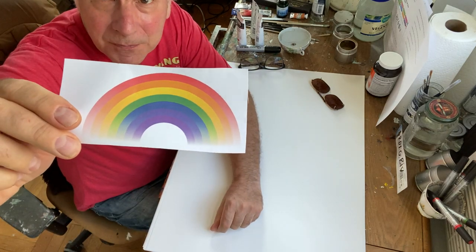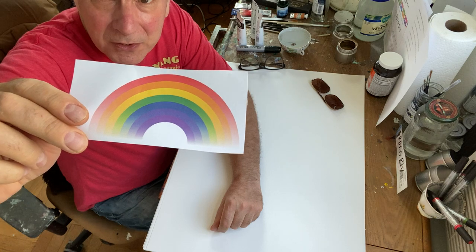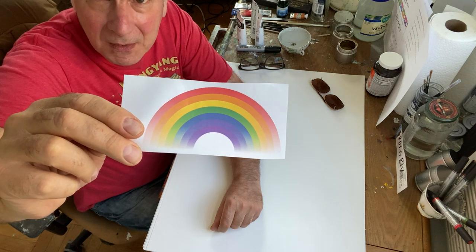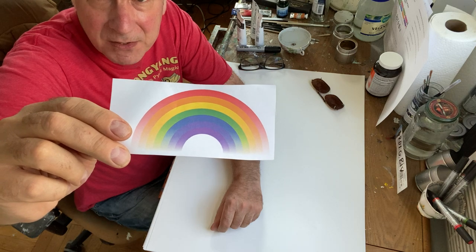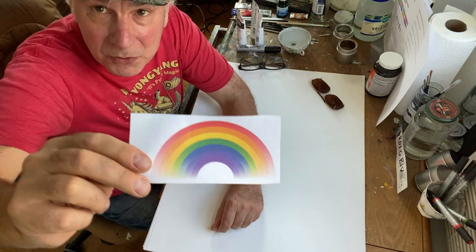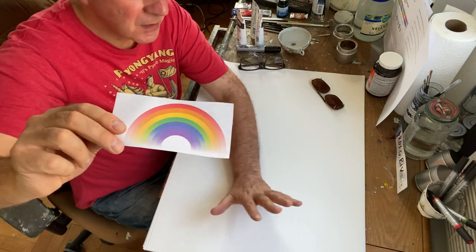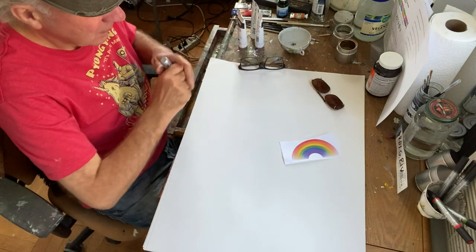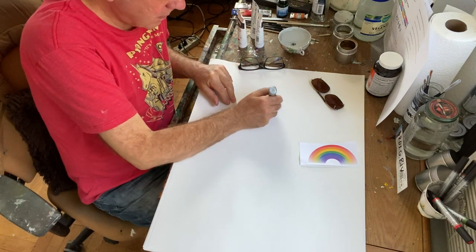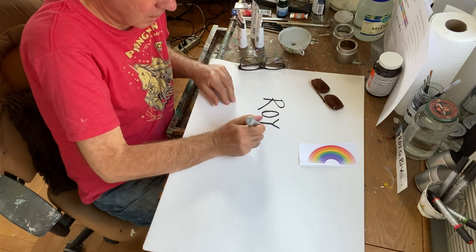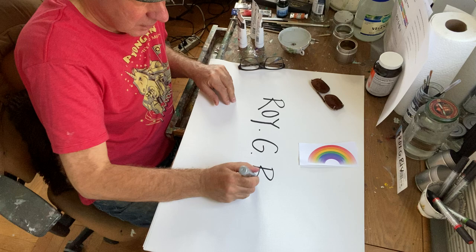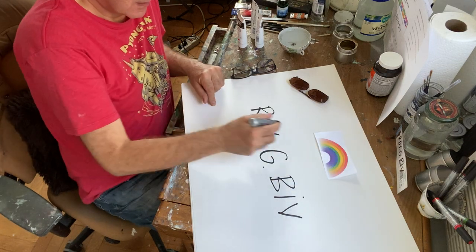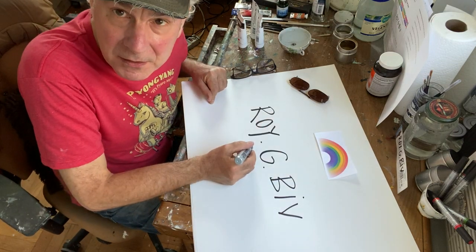The first question is about the rainbow. The colours are always in the same arrangement, and you may have learnt how to memorise it. One easy way to remember it is to turn it into someone's name: ROY G BIV. That simplifies it and gives you the order that the colours appear in — red, orange, yellow...